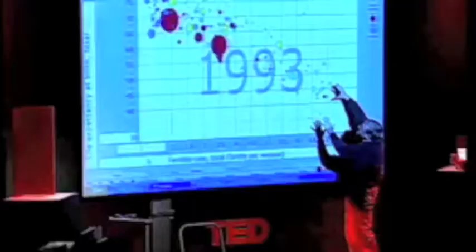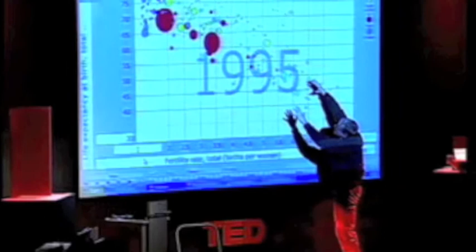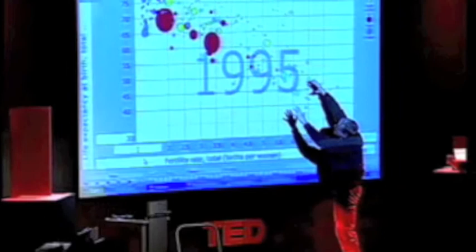But now Bangladesh, it's a miracle that happens in the 80s. The imams start to promote family planning and they move up into that corner. And in the 90s, we have the terrible HIV epidemic that takes down the life expectancy of the African countries. And all the rest of the world moves up into the corner where we have long lives and small family. And we have a completely new world.